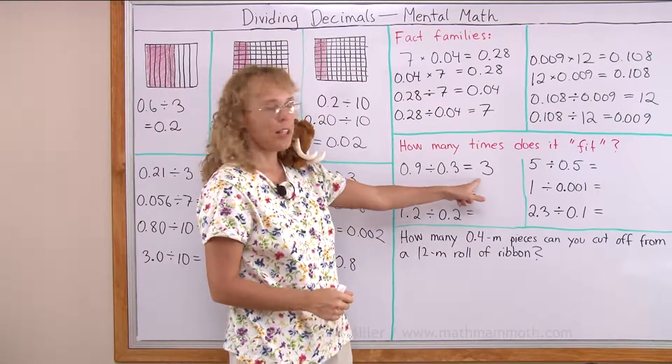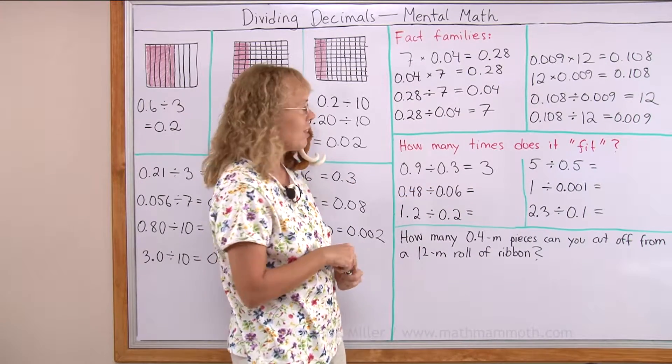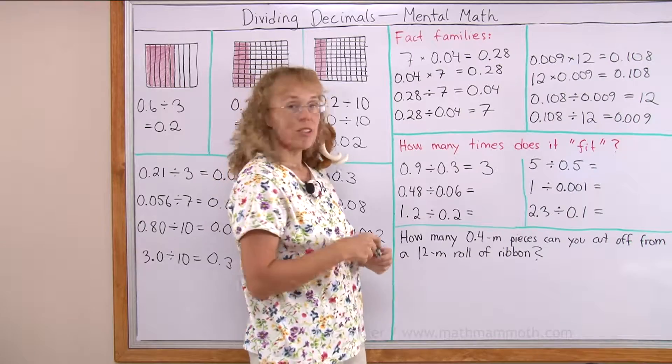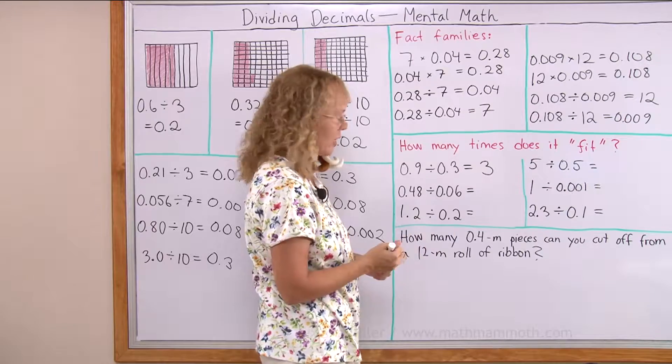Notice, you do not put here 0.3 or any other decimal. It is 3, the whole number 3. You can check by multiplying. 3 times 3 tenths equals 9 tenths. It checks.